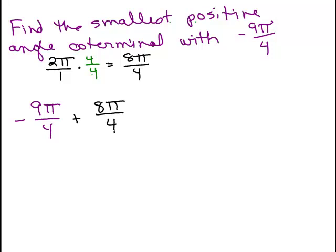And before doing the calculation, will that give me a positive angle? So I've got a common denominator, negative 9π plus 8π. That's still going to be negative. So I'm going to add another 8π/4. See if that makes it positive.